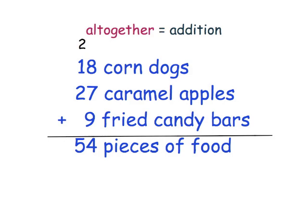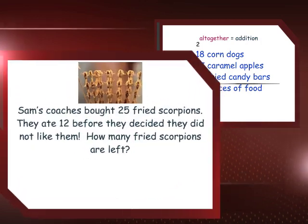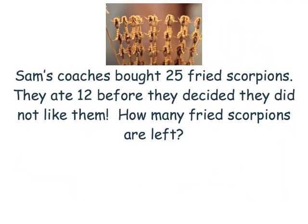After I saw them, they looked pretty full. After talking with Sam's team, I met his coaches. They decided to be a little bit more adventurous and bought 25 fried scorpions. After eating 12, they decided they didn't like them. eSpark viewers, can you help me figure out how many fried scorpions they had left?